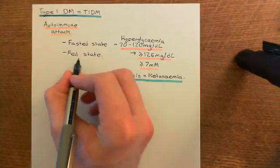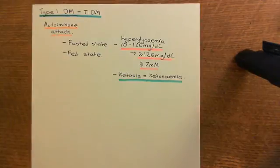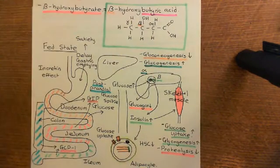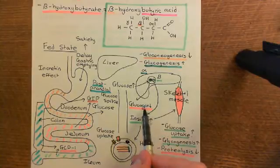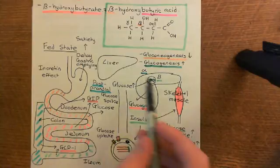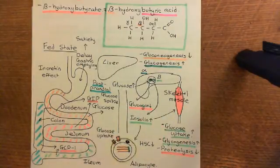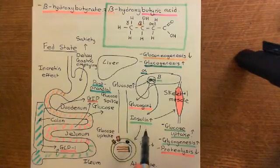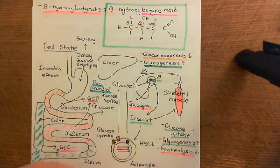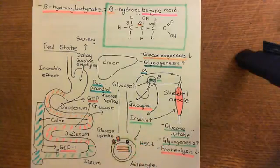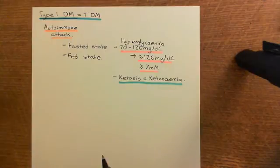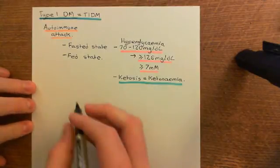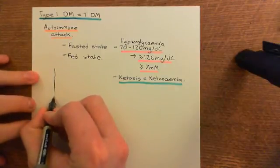Now let's talk about the effect on the fed state. In the fed state, remember the role of insulin: insulin goes up, glucagon goes down, and insulin promotes the liver, skeletal muscles, and adipocytes all taking glucose from the blood — to lower blood glucose because glucose is being tipped into the blood by the intestine. If you now don't have insulin because the beta cells have gone, glucose is just going to be tipped into the blood by the intestine and the postprandial glucose spikes are going to be out of control.